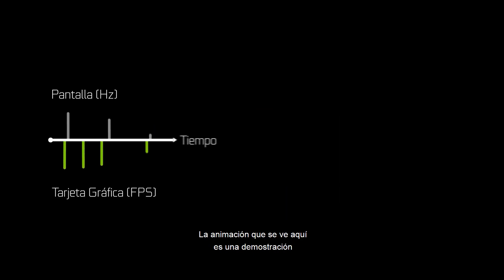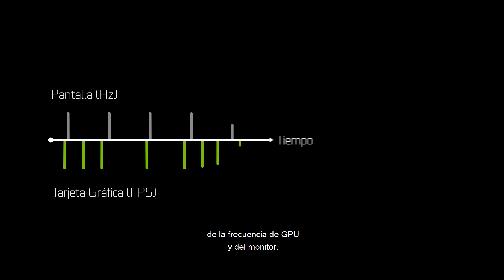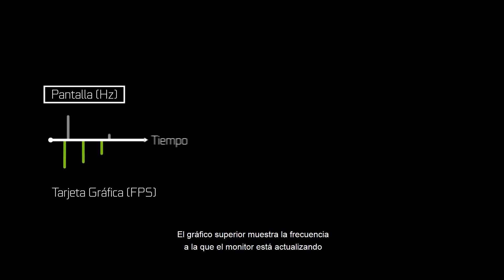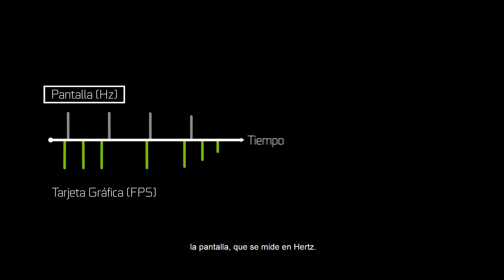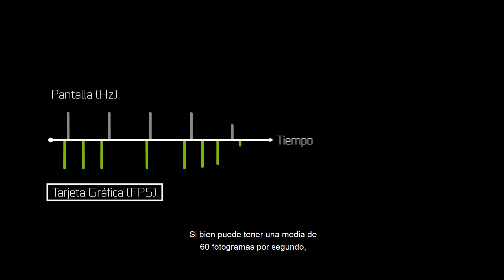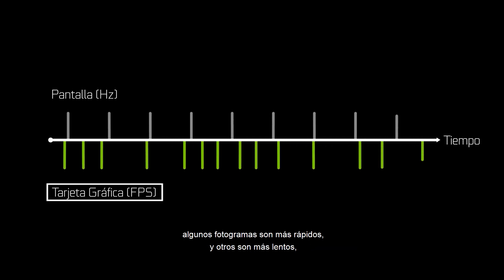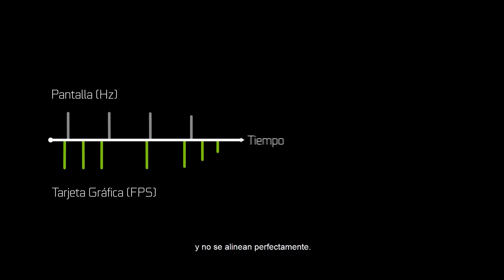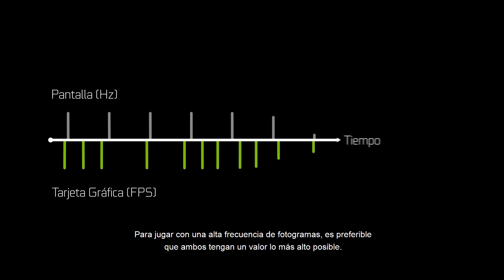The animation shown here is a demonstration of the monitor and the GPU's rates. The topmost graph shows the rate at which the monitor is refreshing the screen, measured in hertz. On the bottom, you're seeing the graph of the GPU's render rate, or frame rate. While it might average 60 frames per second, some frames are faster and some are slower, and they don't perfectly align. For high frame rate gaming, you want both of these to be as high as possible.